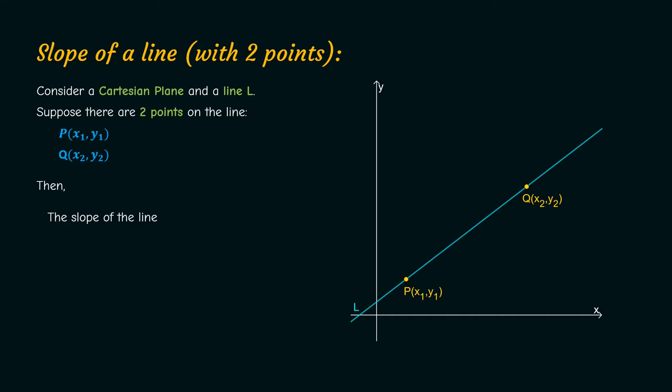Then the slope of the line, which is denoted by m, is equal to (y₂ - y₁)/(x₂ - x₁). In simpler terms, slope m equals change in y by change in x.